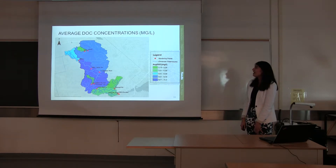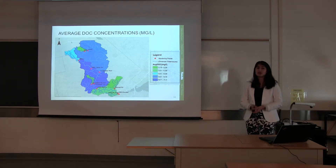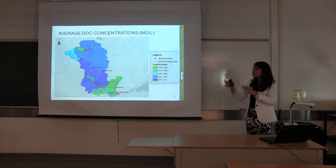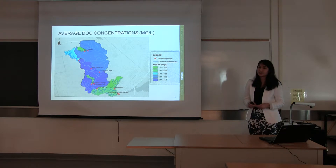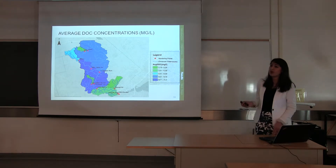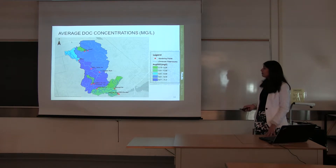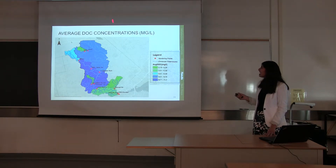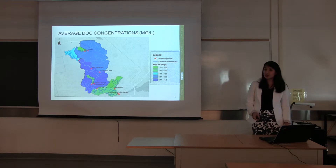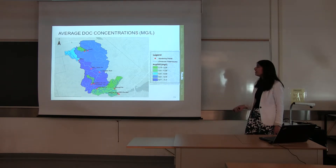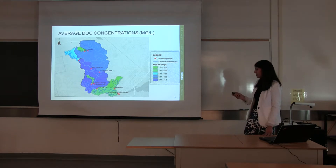A map of the eight discharge sites plus the three Water Survey of Canada sites was made using ArcGIS. The delineations are based on watershed boundaries of each sampling point. For this map, the average DOC concentrations are displayed — higher concentrations of DOC are shown in darker blue, whereas greener colors indicate relatively lower concentrations.